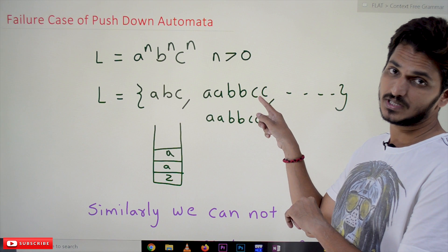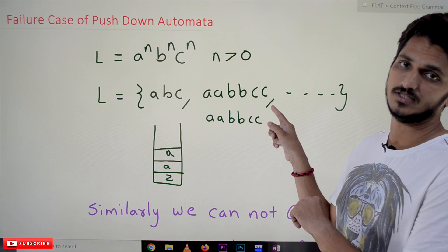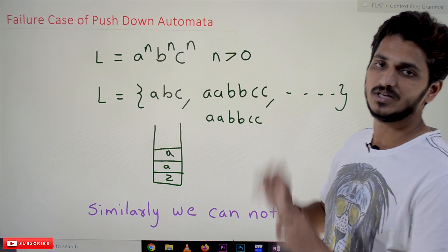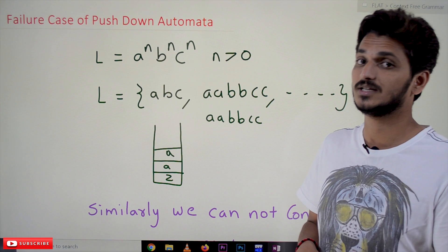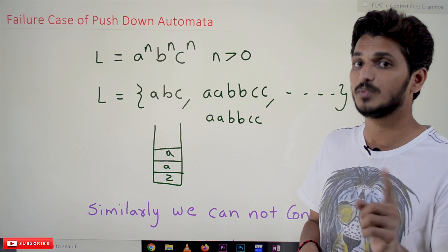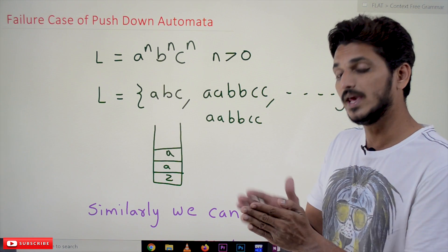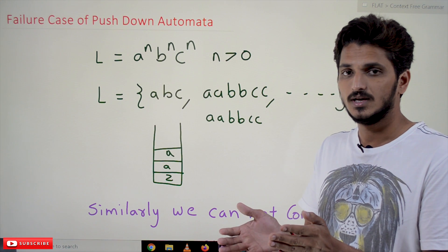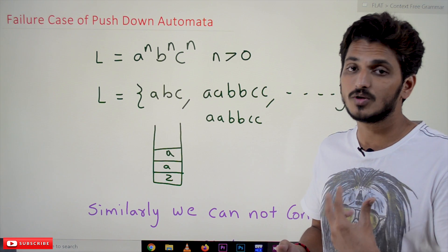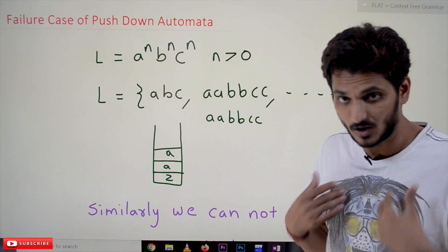Similar language we already discussed in our previous classes: a^n b^n. A is followed by equal number of b's. We can construct a pushdown automata for a^n b^n, but we cannot construct a pushdown automata for a^n b^n c^n.